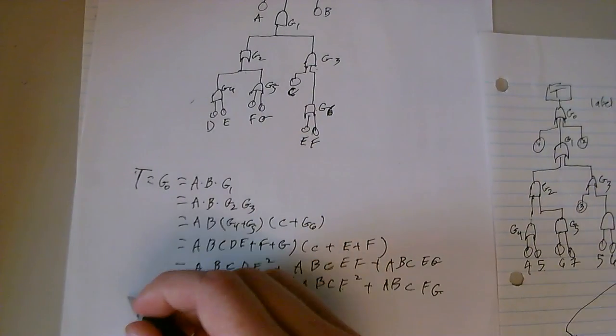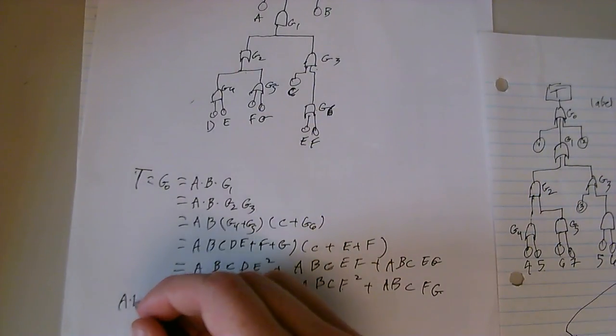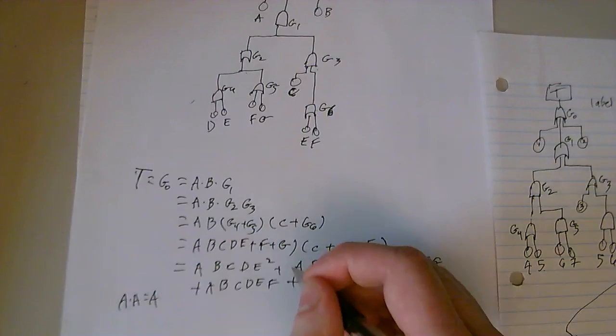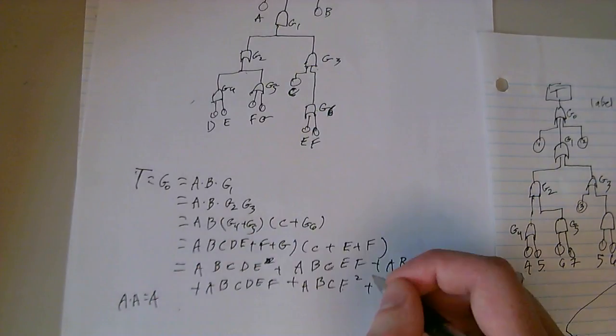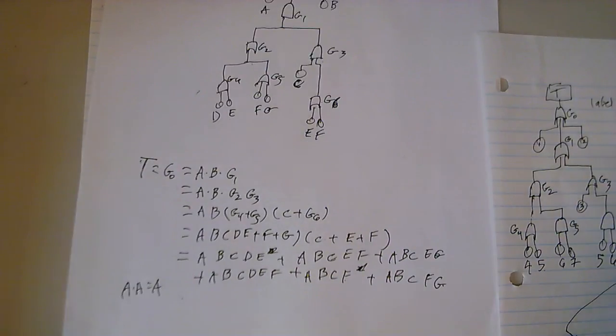See the squared terms? Remember that I said A dot A equals A, so they just get reduced down to no squares. This is our final answer.